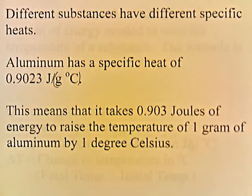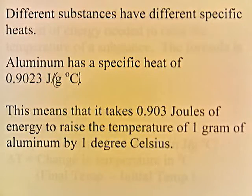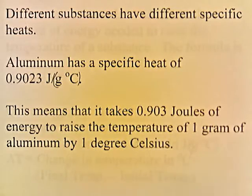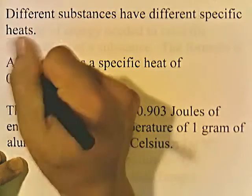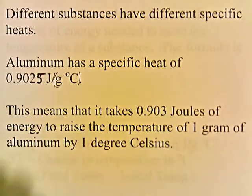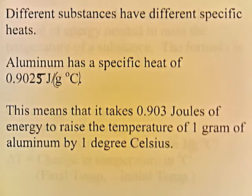Different substances have different specific heats. Aluminum has a specific heat of 0.903 joules per gram degree Celsius. This means that it takes 0.903 joules of energy to raise the temperature of 1 gram of aluminum by 1 degree Celsius.